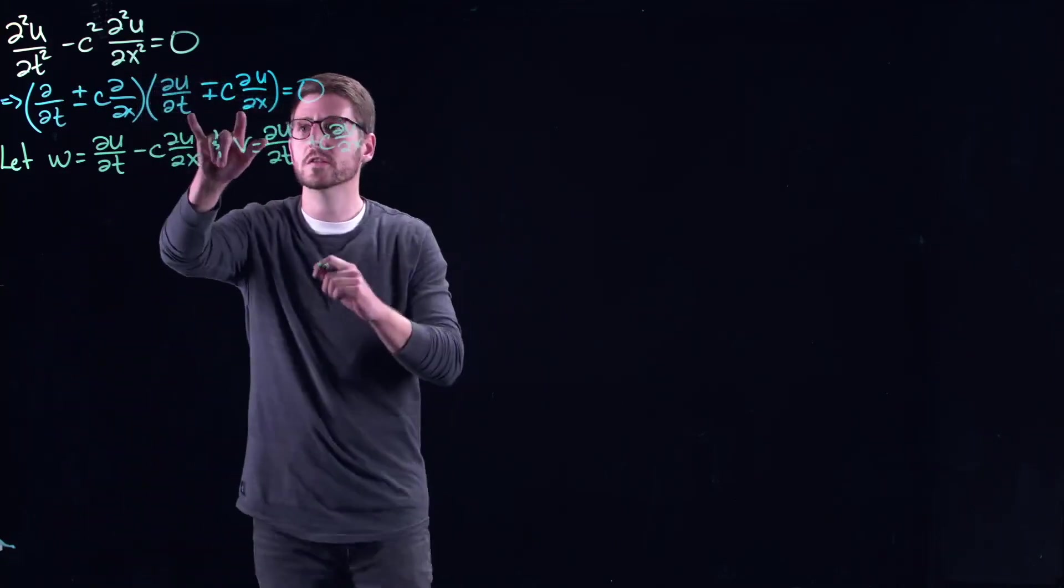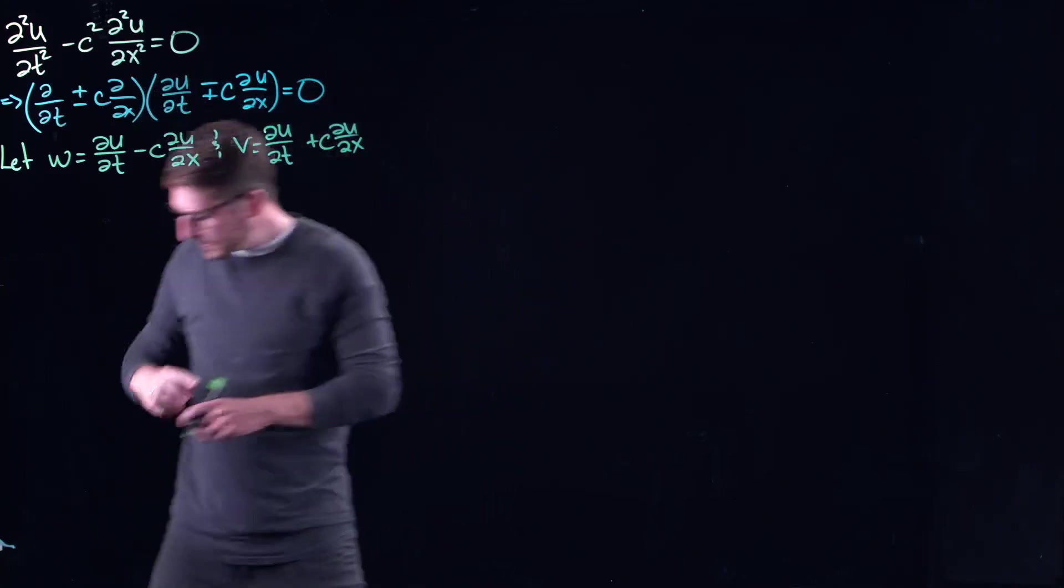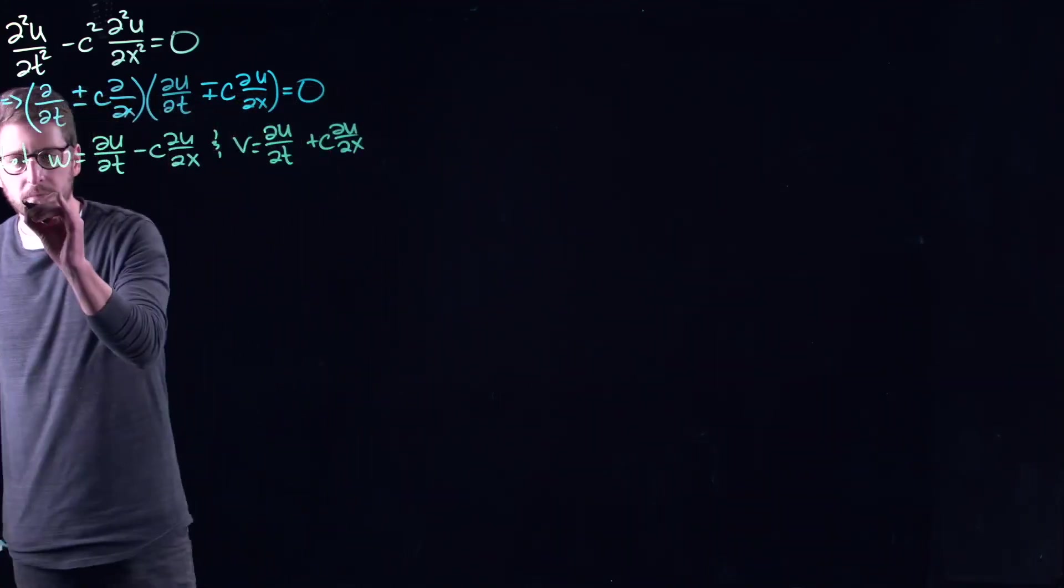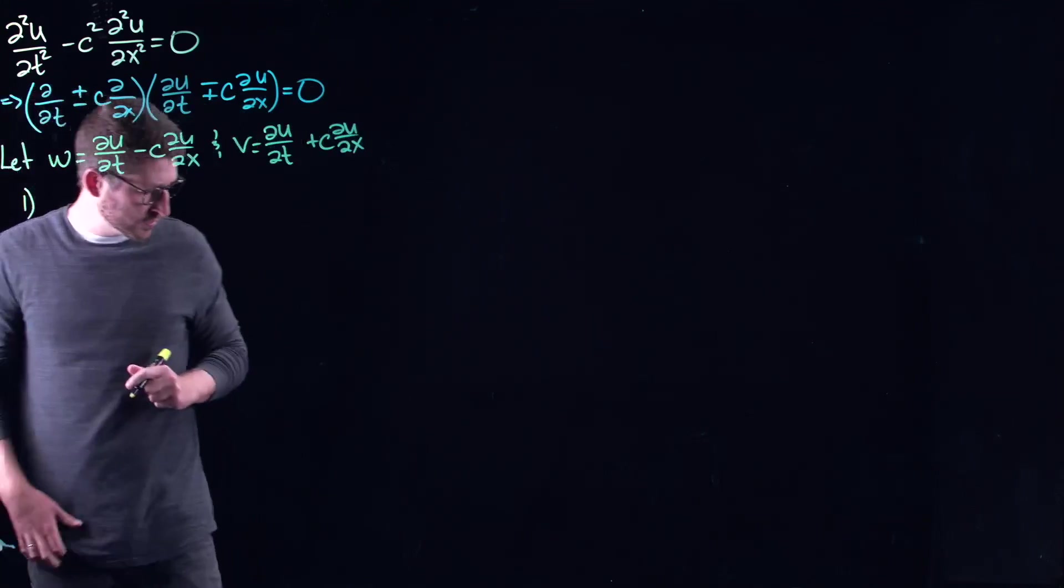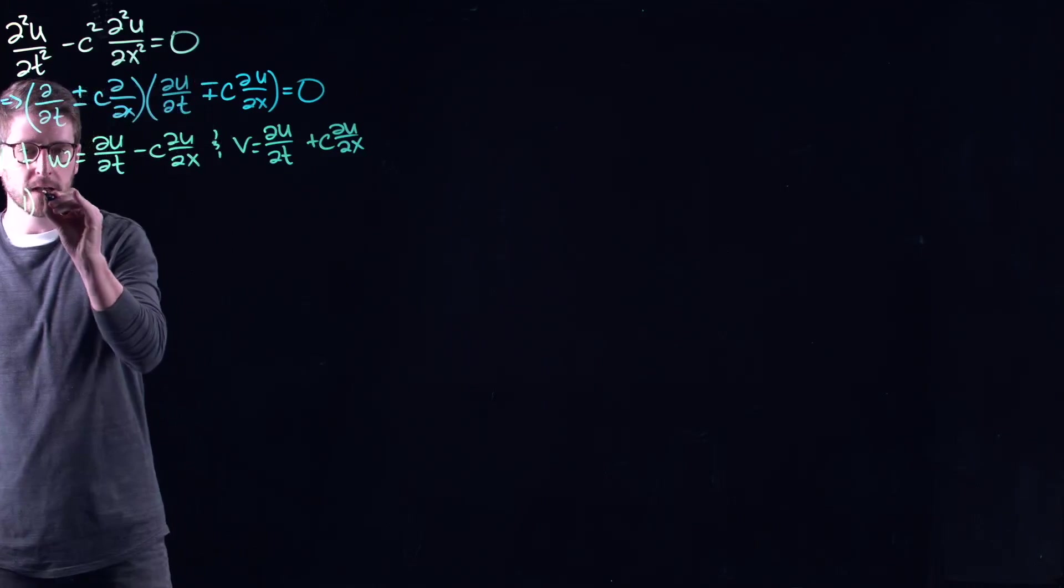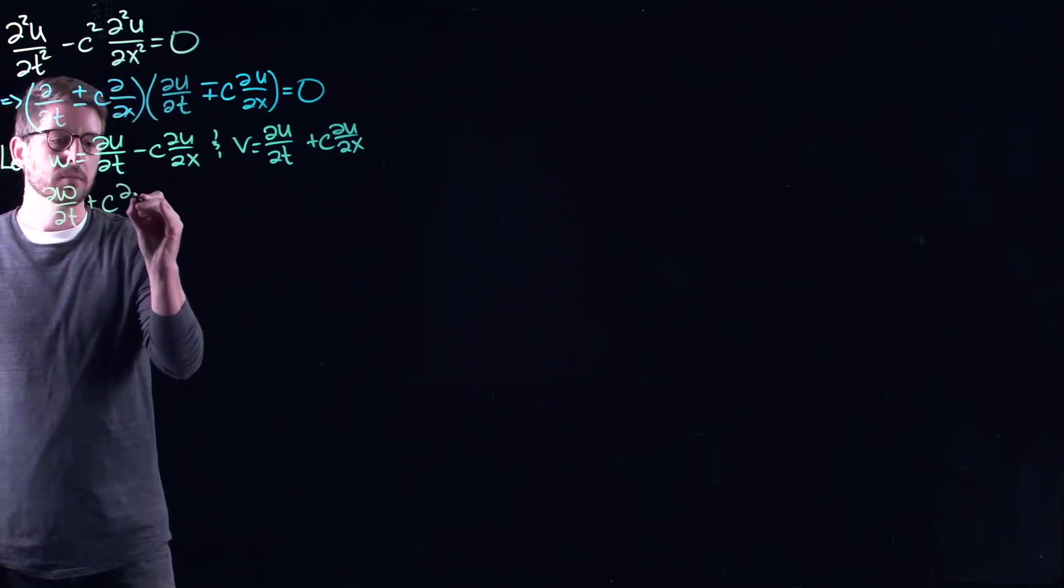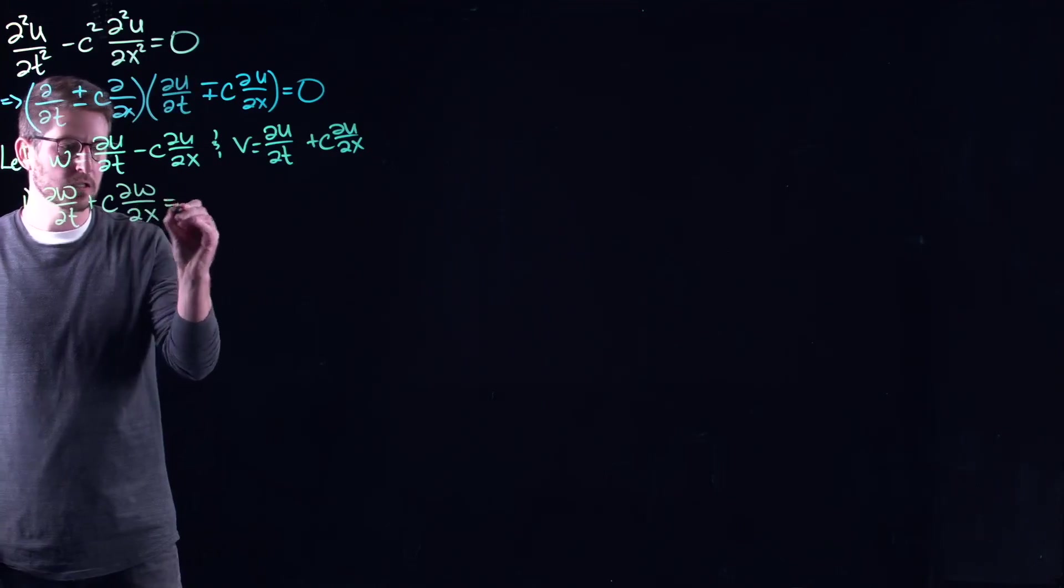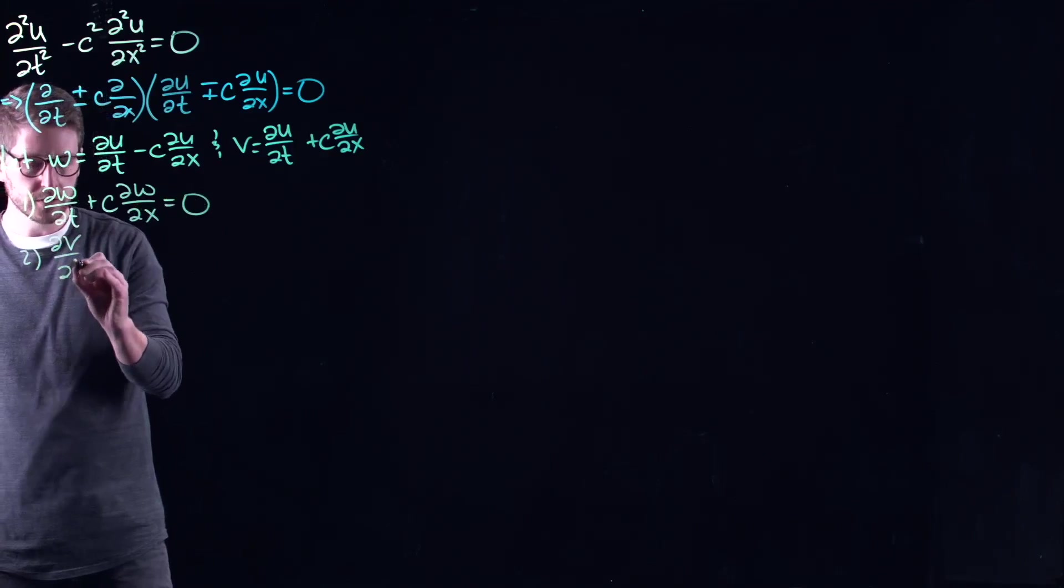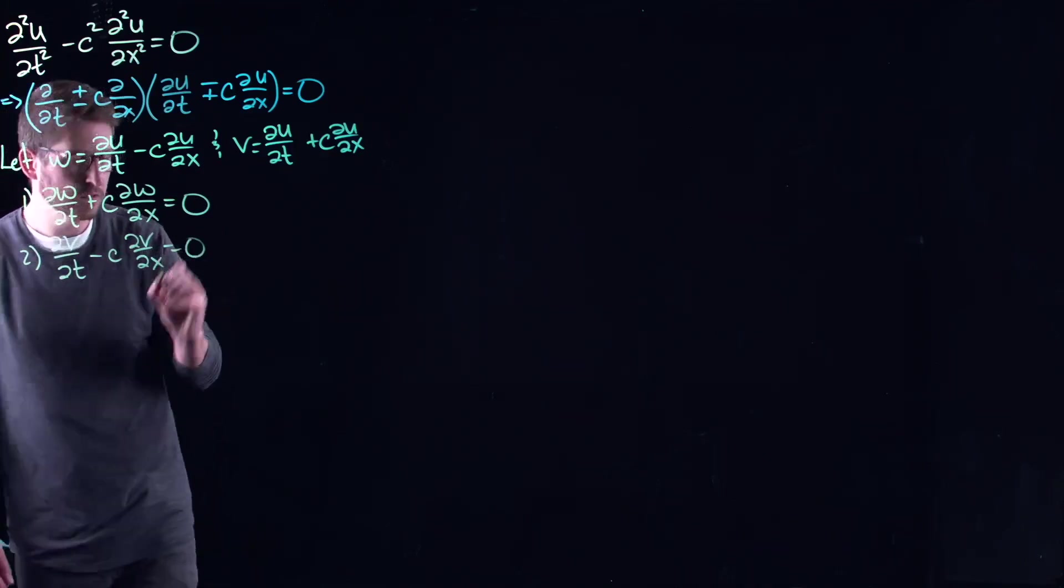So that's just taking care of this term. I'm either calling it w or v depending on the plus or minus here. And essentially what that does is the factored equation gives you two what we'll call first order wave equations. So the w equation, that's with the minus here, so I'm going to get the plus on this side: partial w/partial t plus c partial w/partial x equals zero, or partial v/partial t minus c partial v/partial x equals zero.